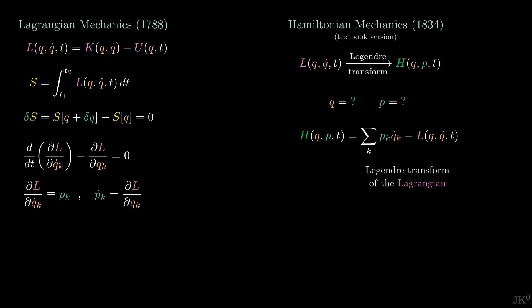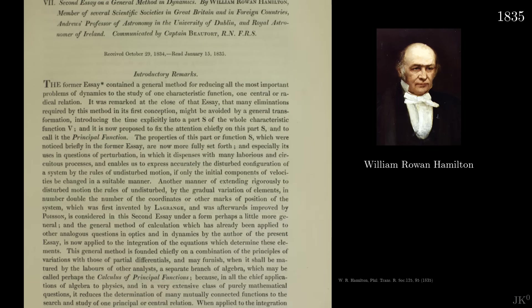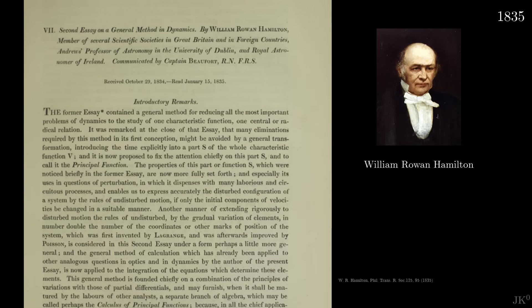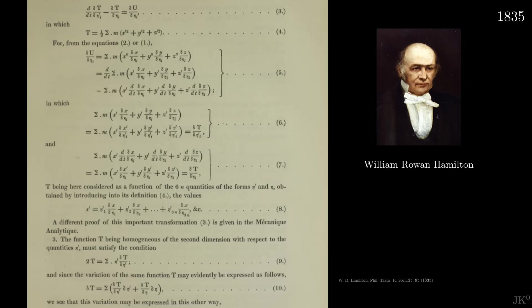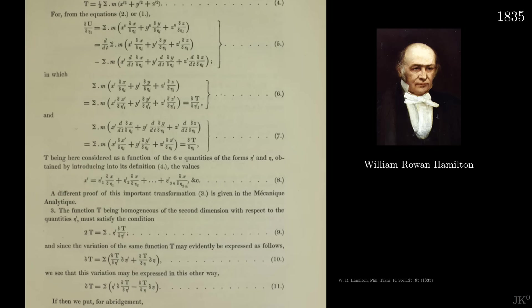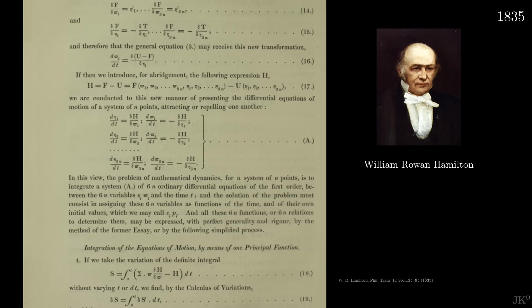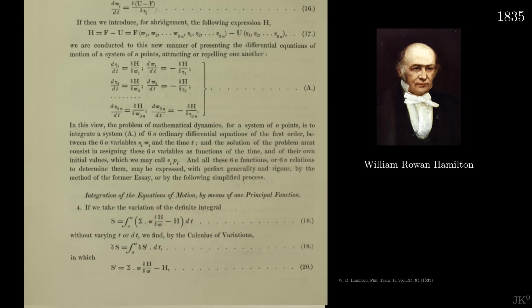This is the Legendre transform of the Lagrangian. If you are new to this channel, welcome, great to have you here. If you are not new, you know by now that more than the final answer, I am interested in how these new concepts were originally found. I carefully read Hamilton's paper and found no mention of the Legendre transform. In the end, he effectively found the Hamiltonian to be given by what we call a Legendre transform of the Lagrangian, but he followed a different path, which I will show you in this video.